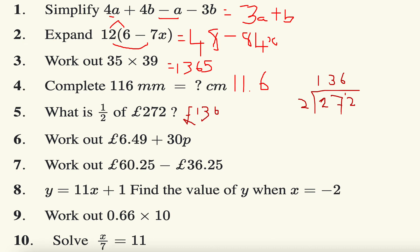Next question: work out six pound 49 add 30p. Well, I'm only adding 30p to 49 pence, so it's six pound 79 pence.